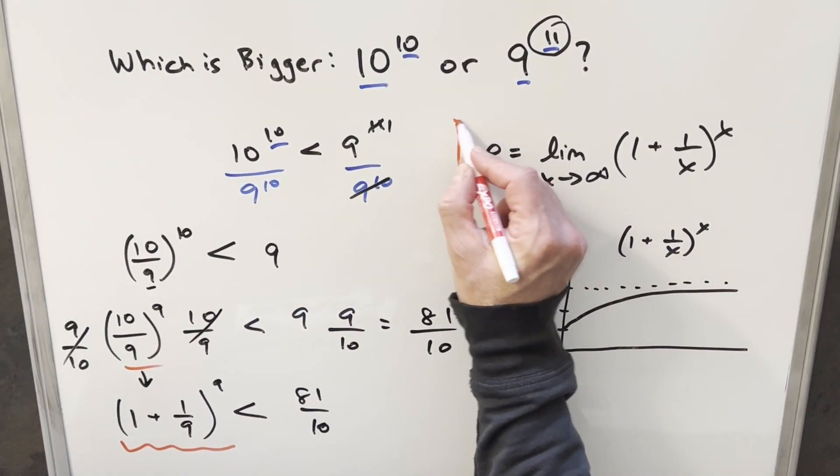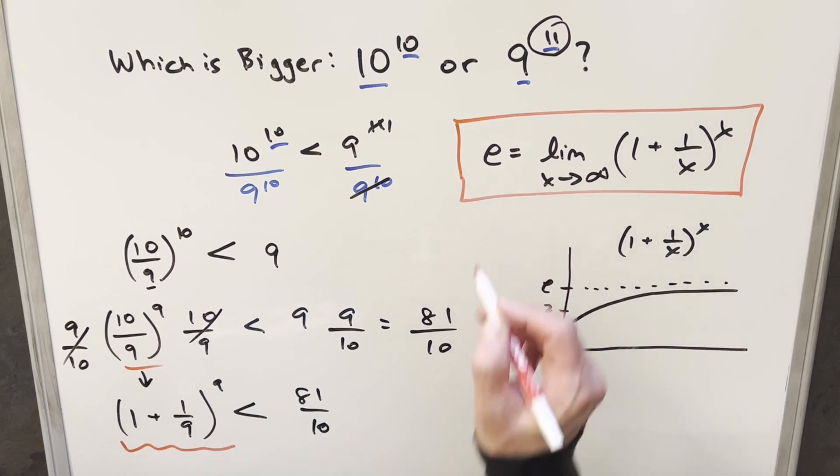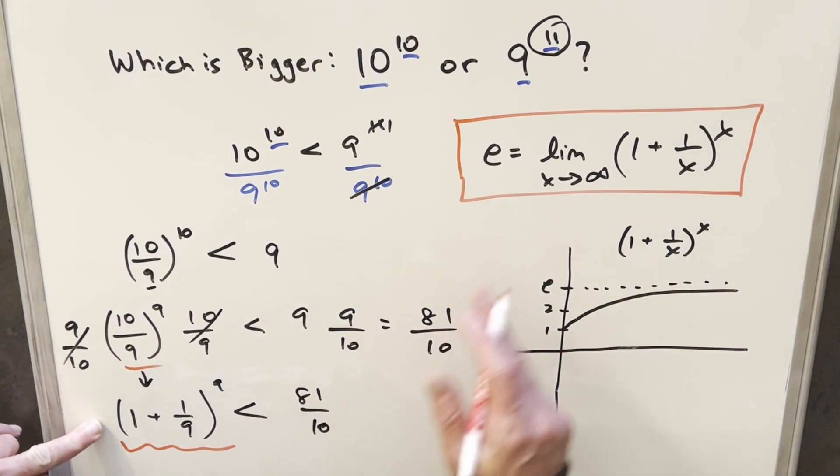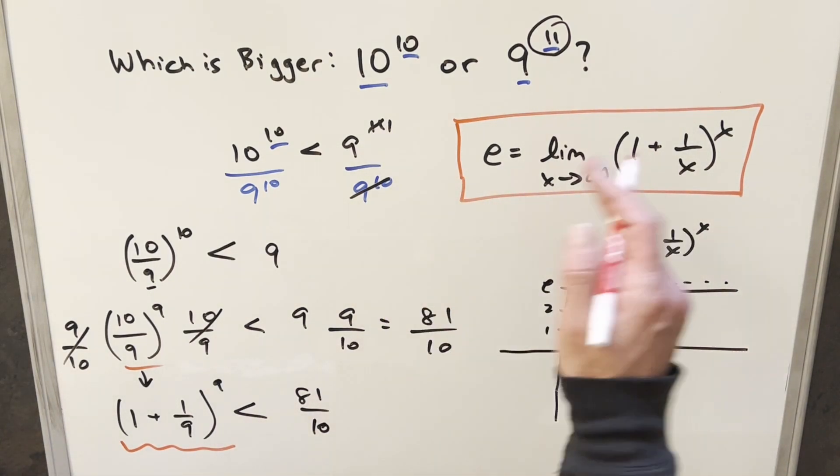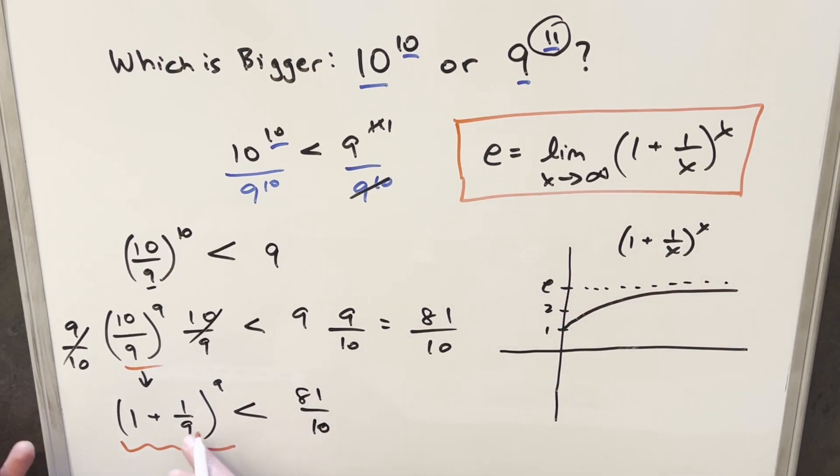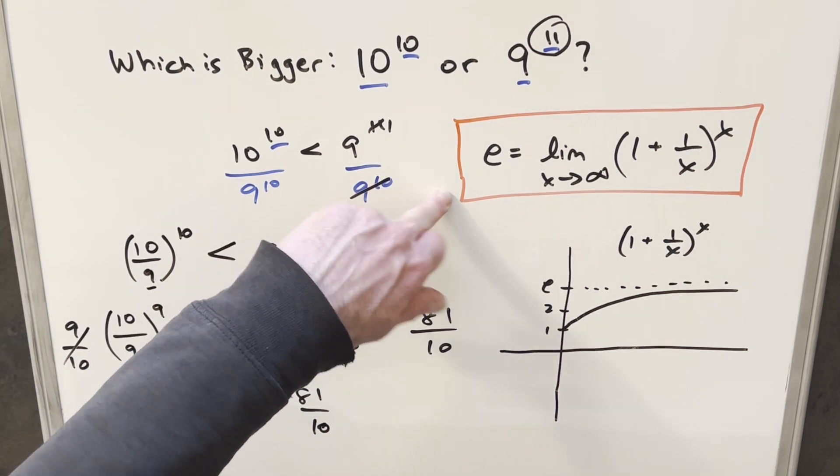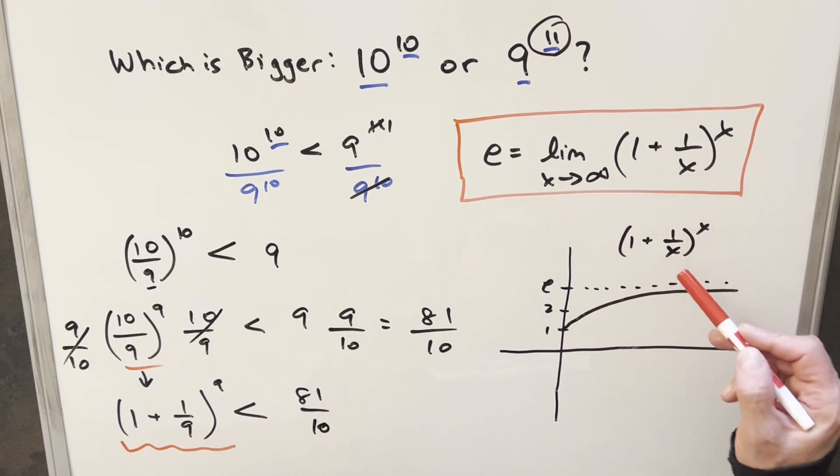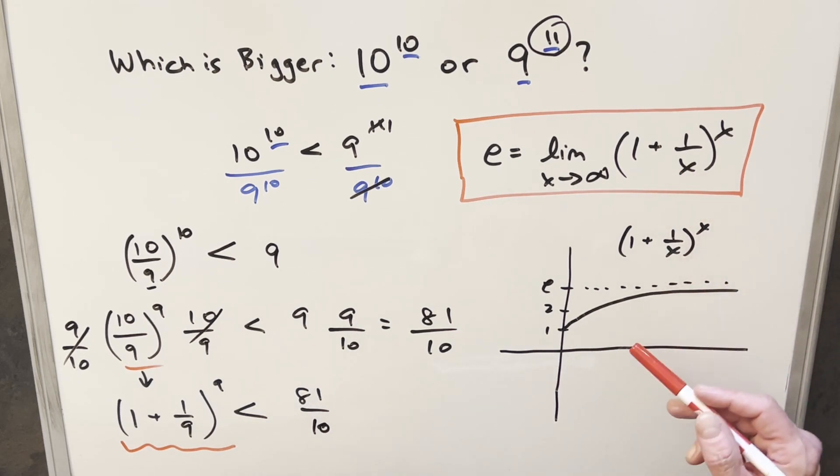We have our definition for e here to the right, and you'll notice it's exactly this form. For our definition of e, to get something approximating e, we have x going to infinity. Over here we just have 9. So what we have here is not quite the same, but we can use this graph for (1 + 1/x)^x to get a sense of it. What you'll notice is that because this is always increasing for positive x values, everything's going to be greater than 1.